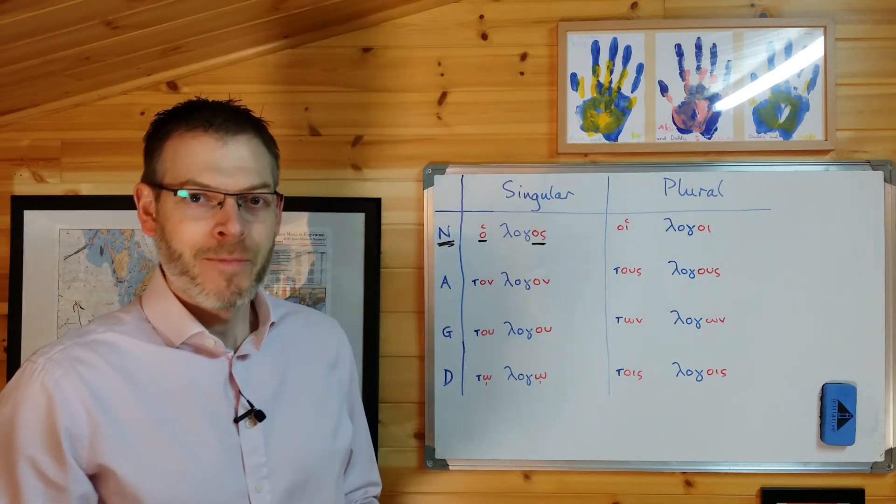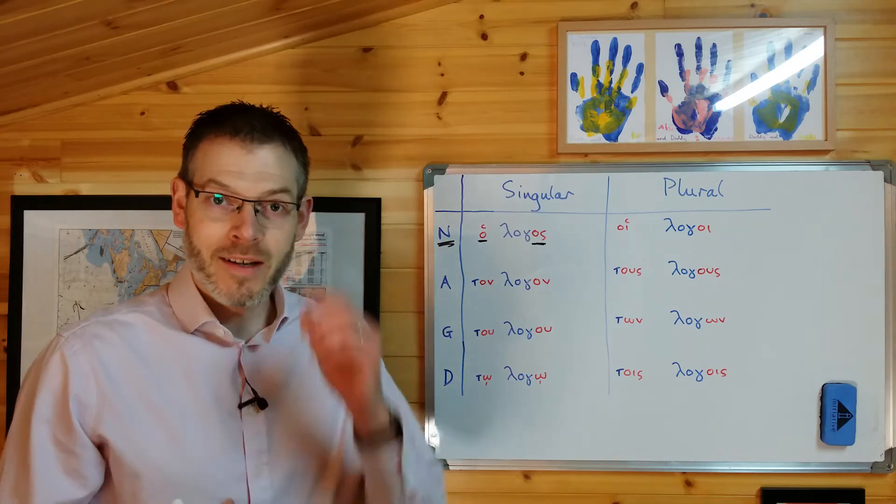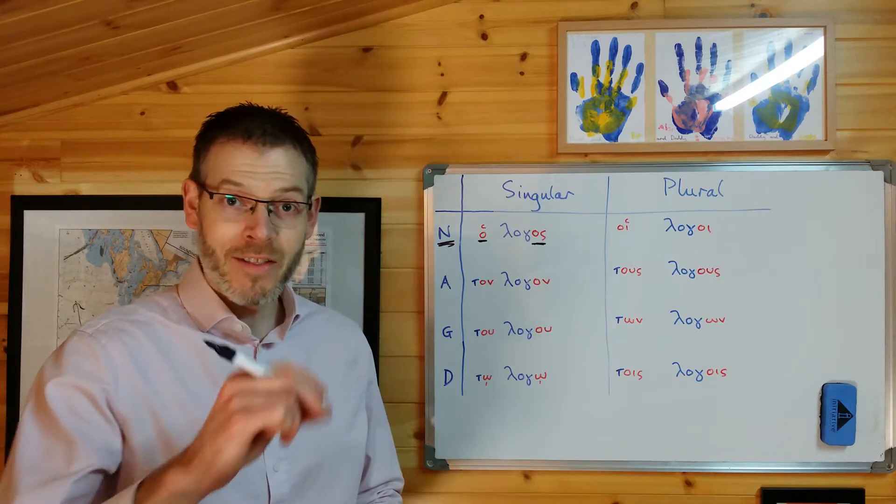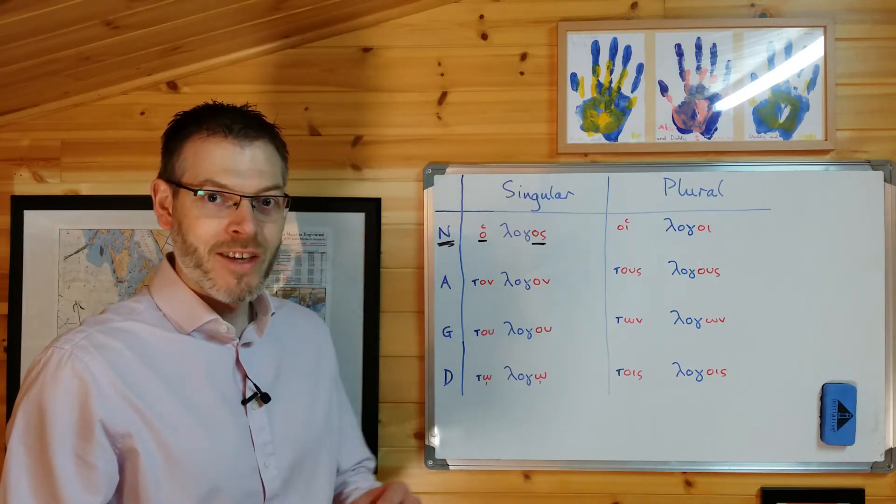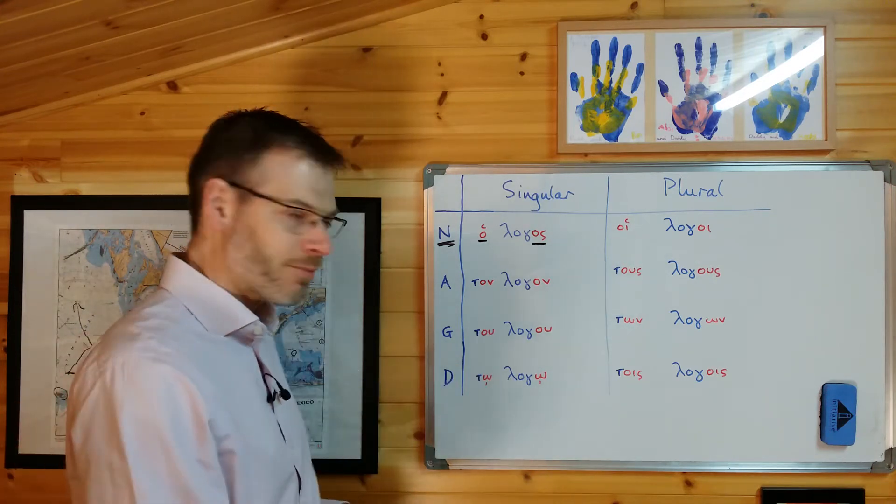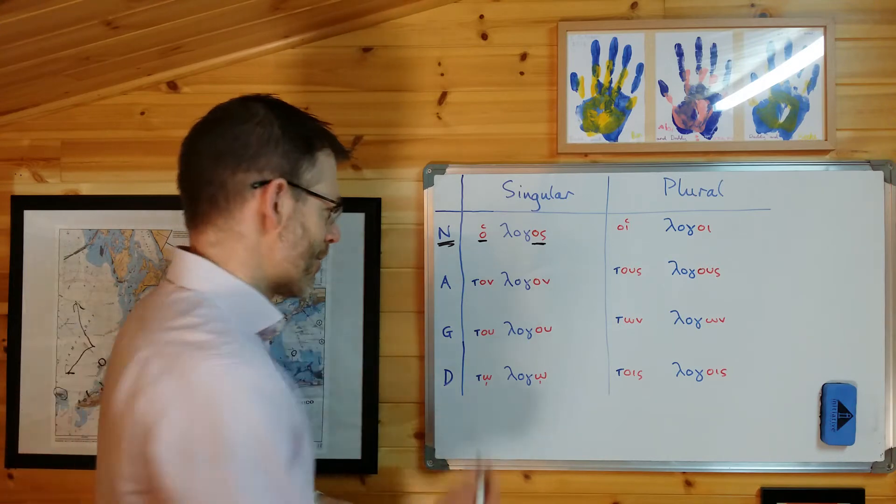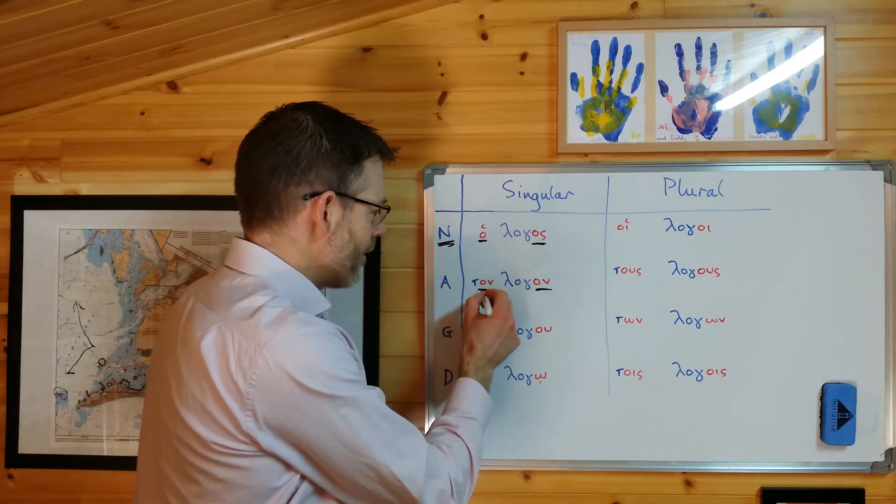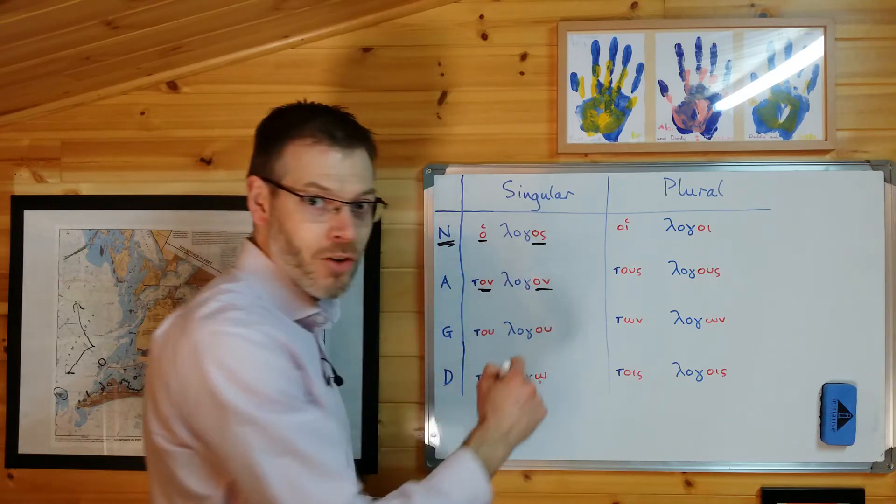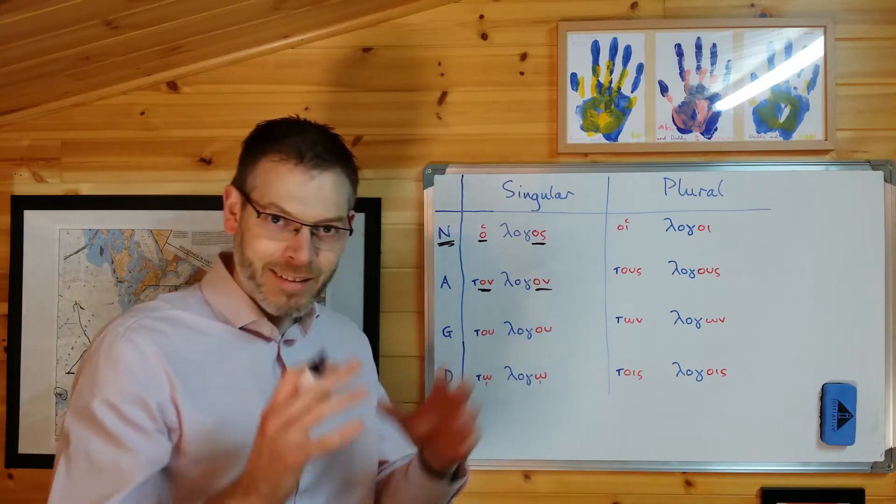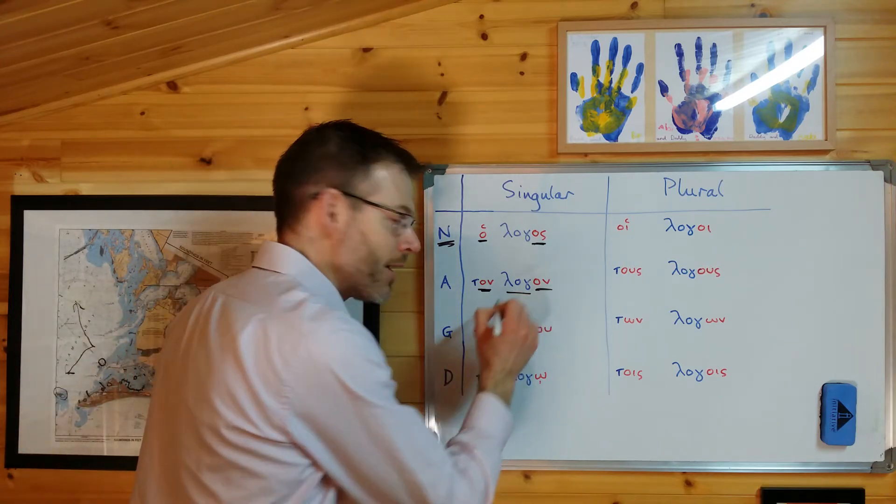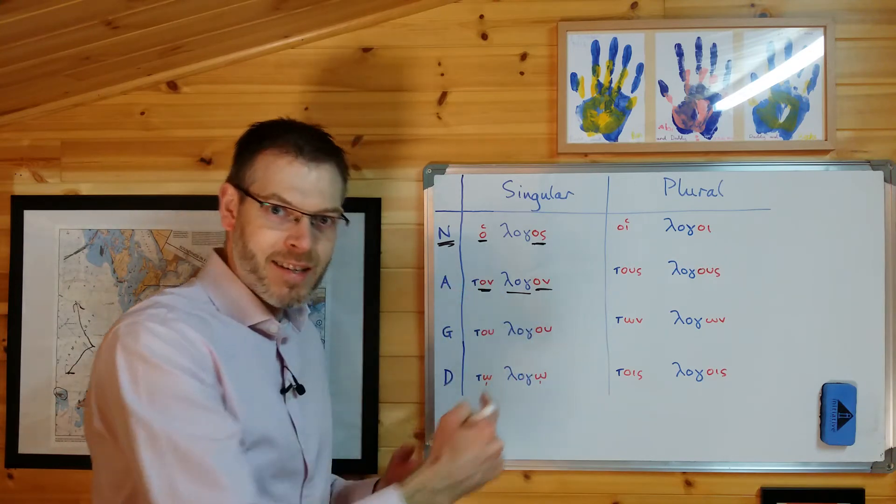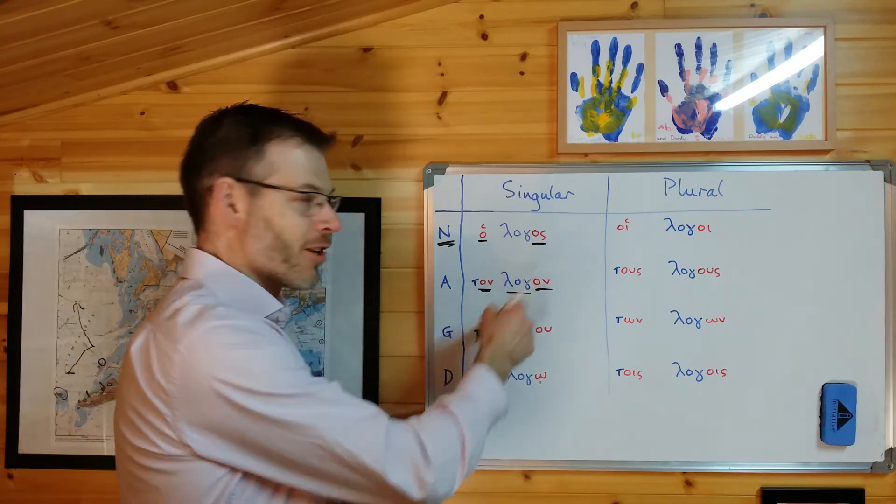Similarly, if you want to make the word the object of a verb in the sentence, it's very simple. You attach another little label to it, this time the accusative label to tell you that it's the object of the verb. And here it is, ton logon. So instead of ho, you have ton. Instead of logos, you have logon. And this is like a little flag, like a little label attached to the stem log, and it tells you that this is not the subject, this is the object of the verb in the sentence, ton logon.